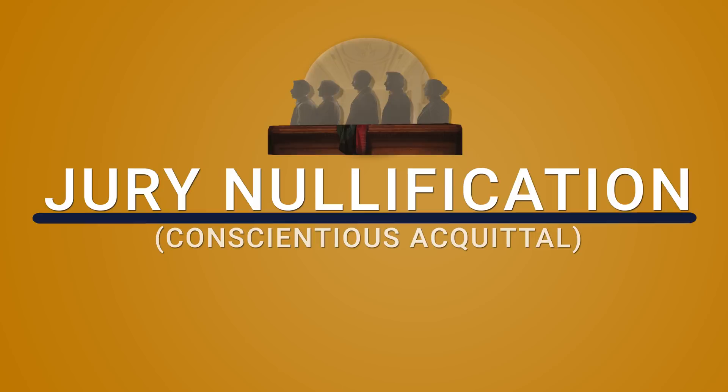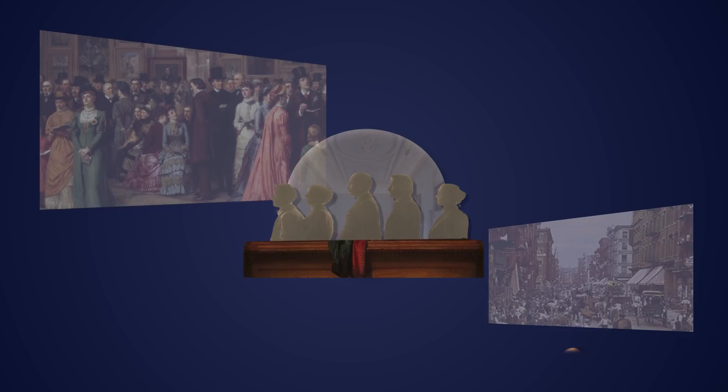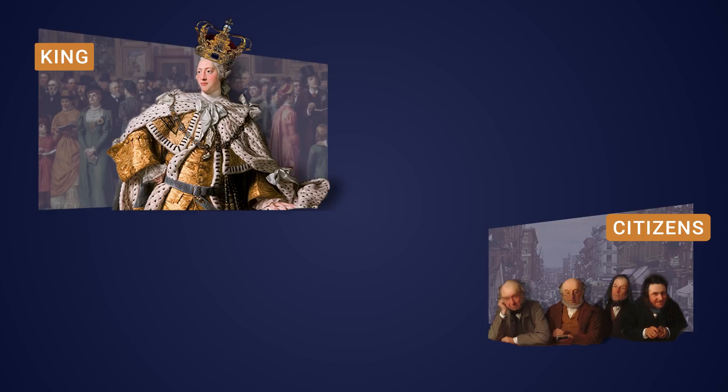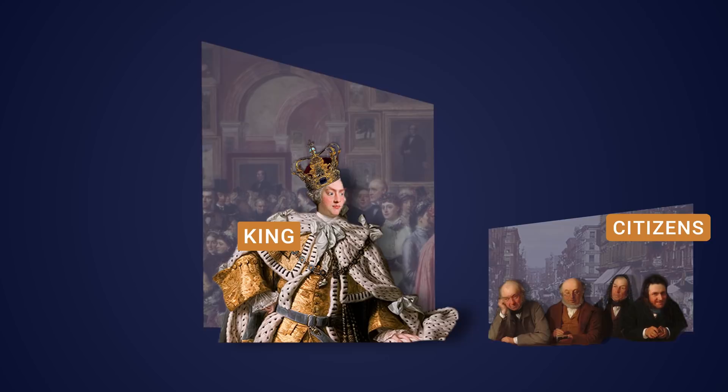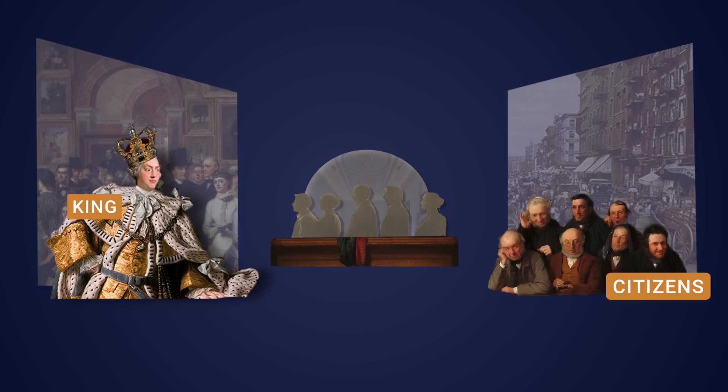This concept of so-called jury nullification or conscientious acquittal is absolutely central to the common law conception of the jury. The jury in England was understood to be a body designed to stand between citizens and the potentially tyrannical government. We had cases where it was very clear that the king was simply trying to get payback against a political opponent or to punish somebody who had challenged the king in some way. And the advent of a jury — a body of citizens who could prevent the king from doing that — was one of the most important developments of the common law.